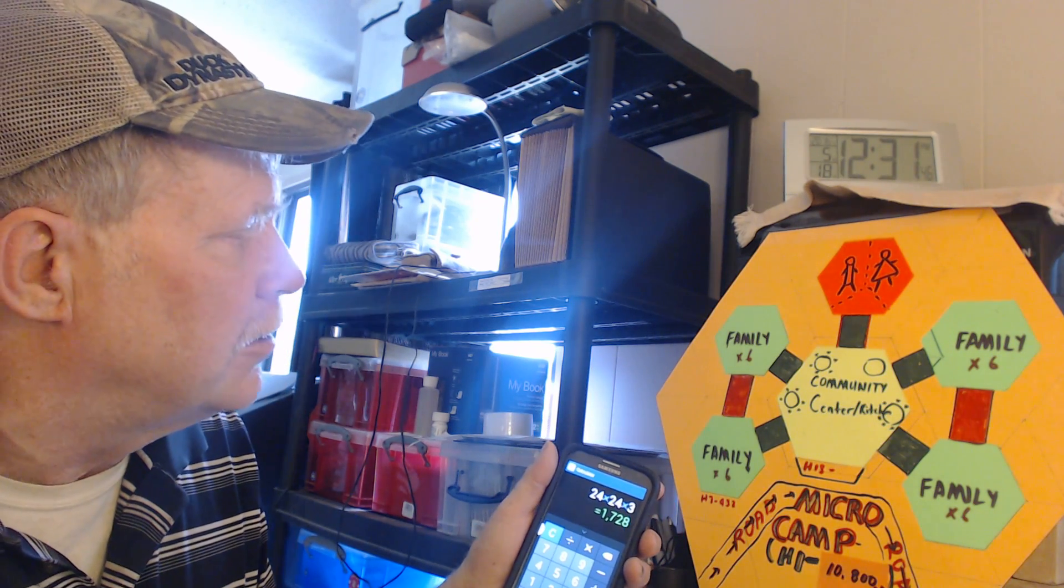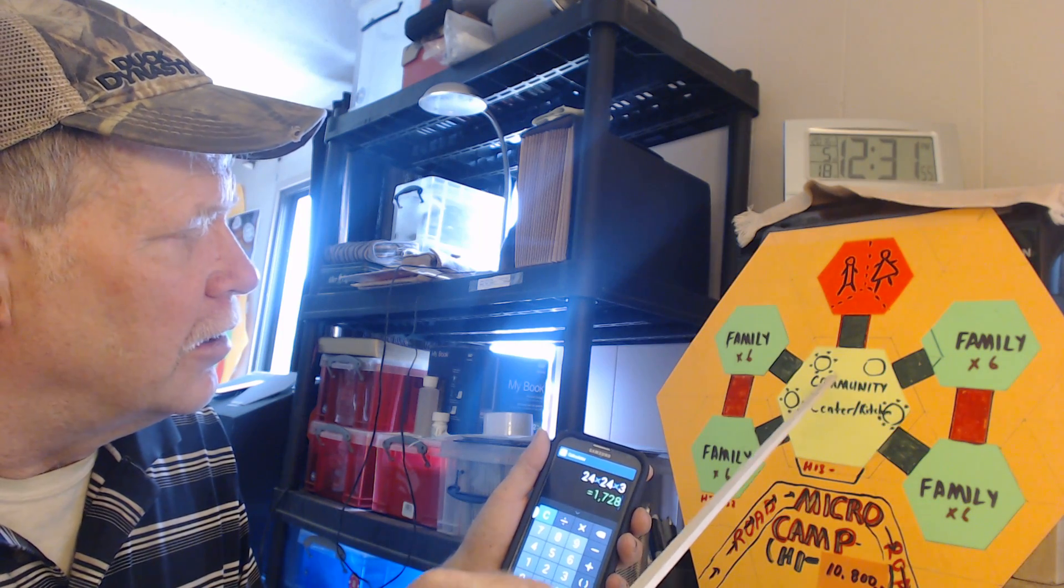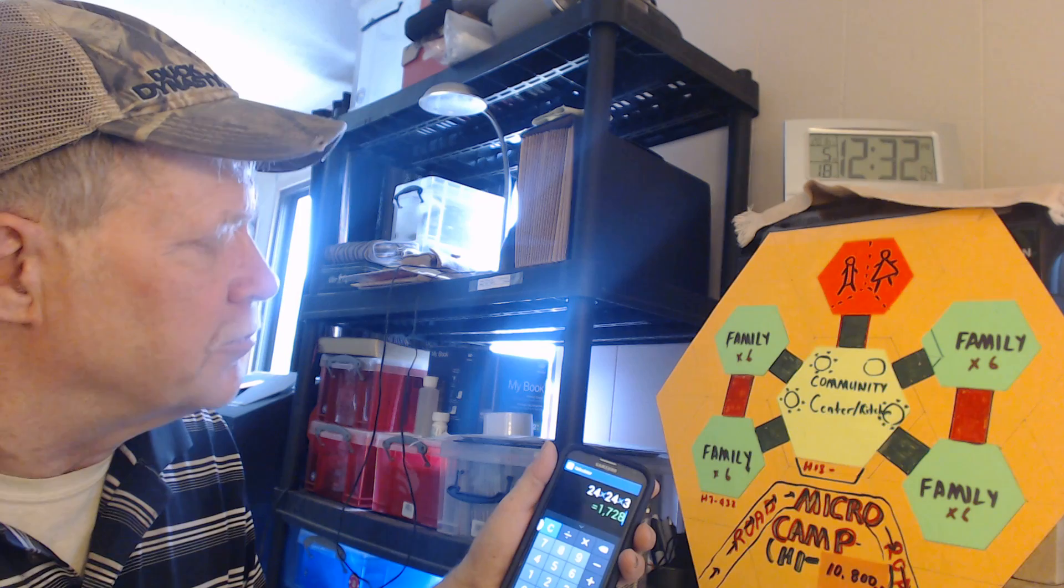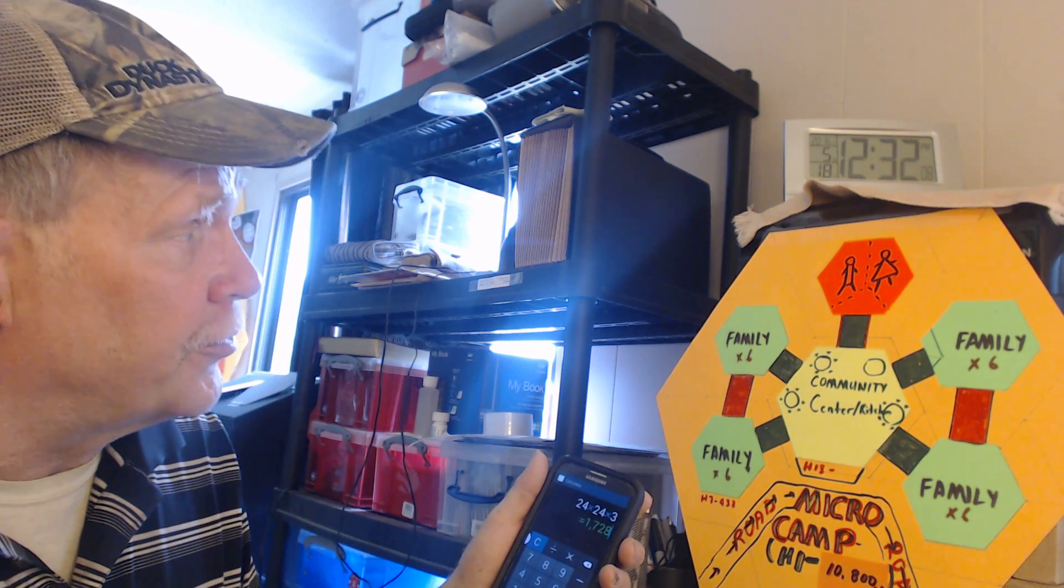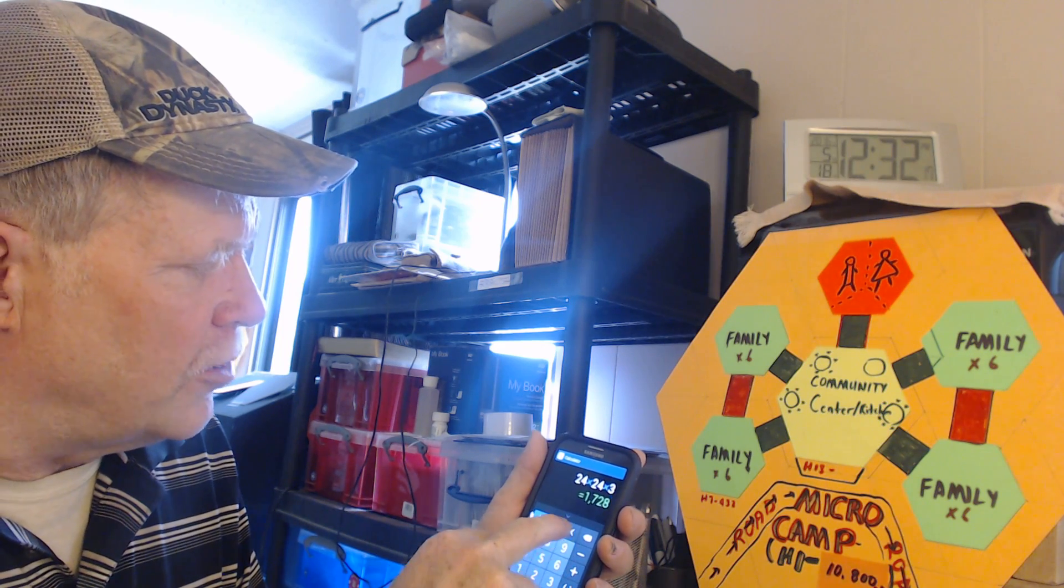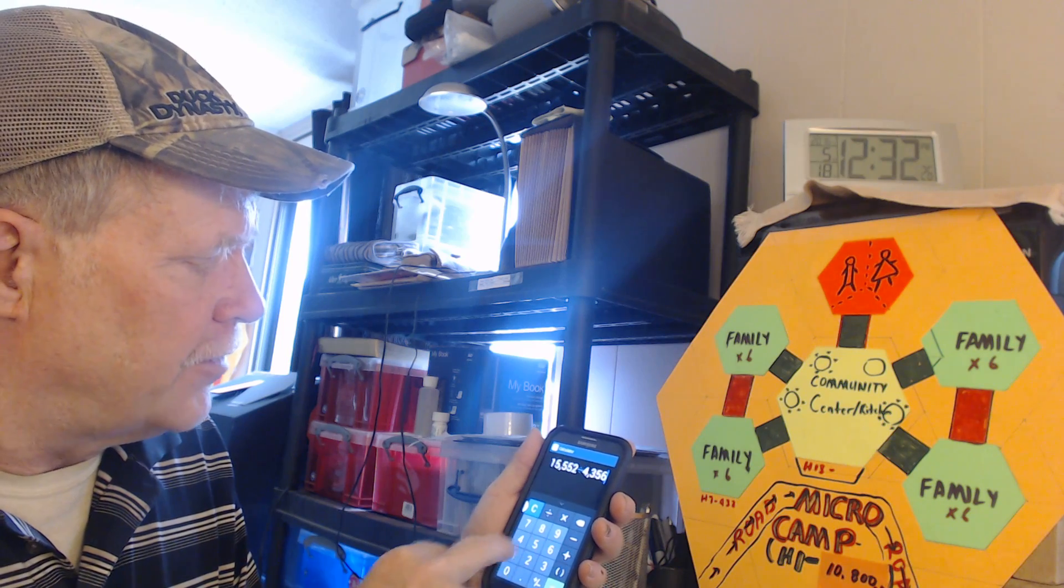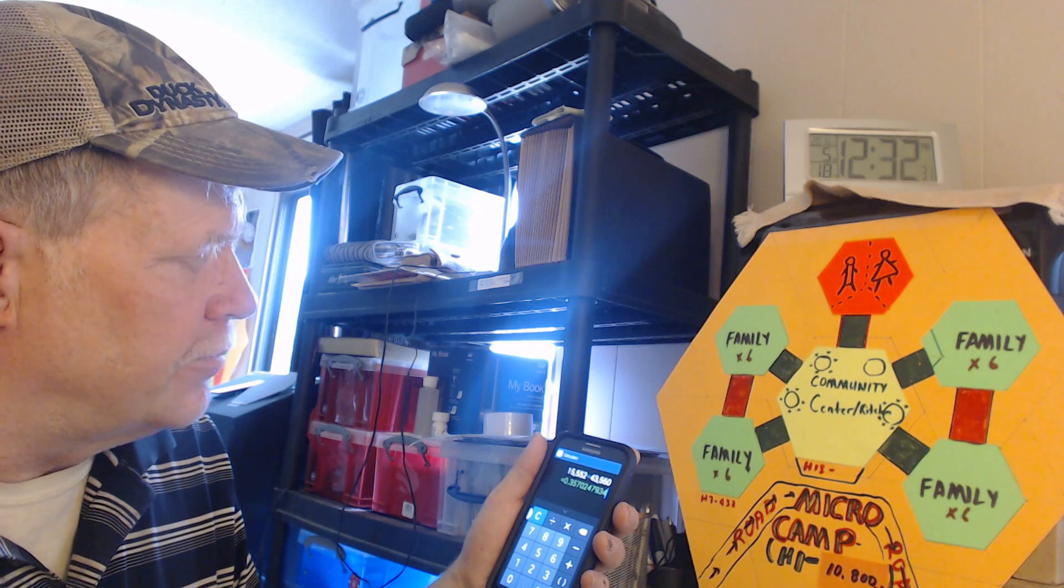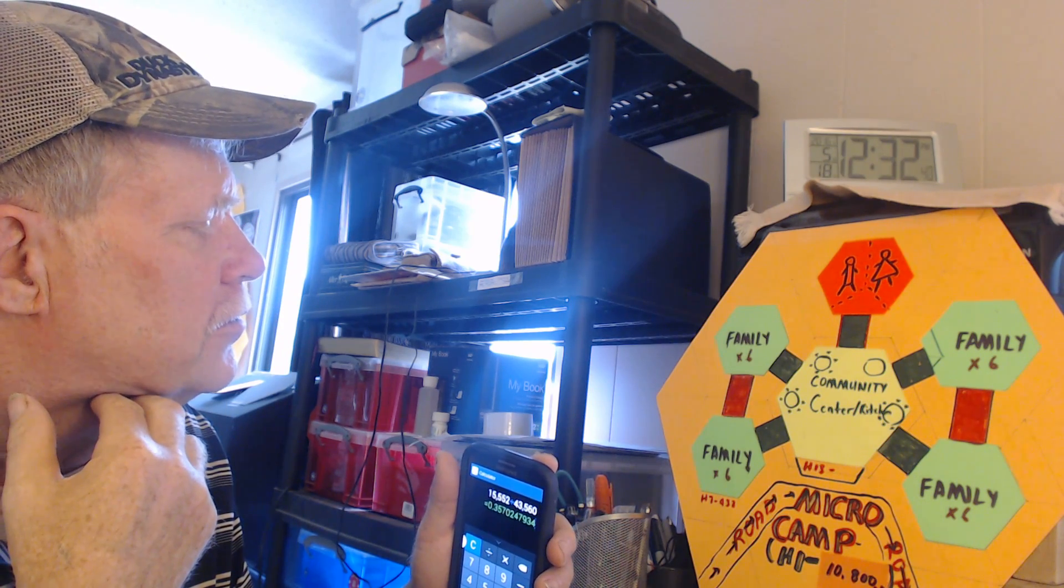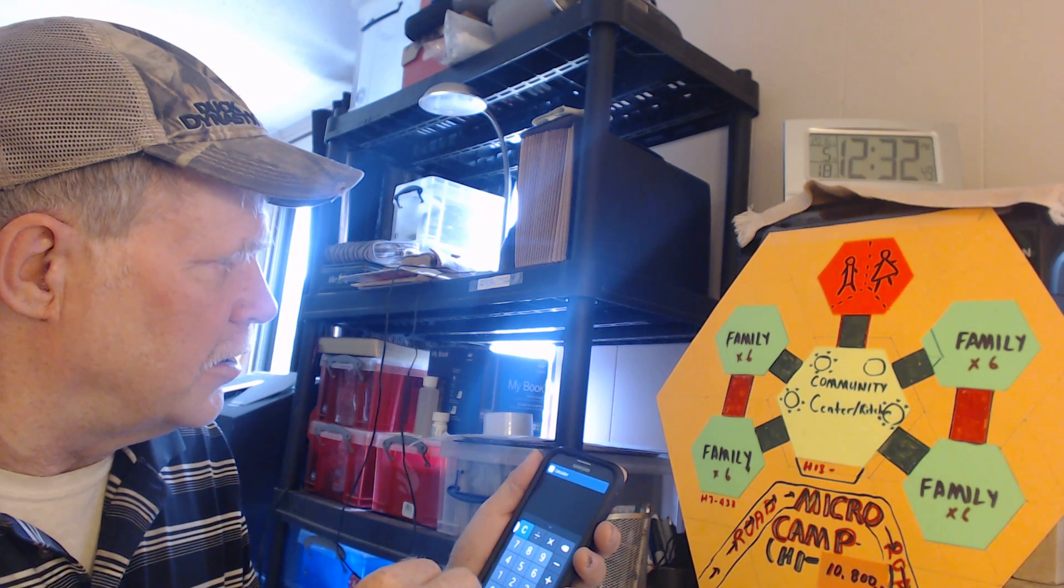So if you wanted to figure that out, let me get my calculator here going. It's probably going to be about a three-part series trying to get this across. So you got 24 times 24 times 3, so it gives you 1,728 square feet to put your community center on. That's no problem. This would be an H13 design - in other words, you would have 13 platforms to make the floor. You would have half platforms that would fit in to complete your wall system.